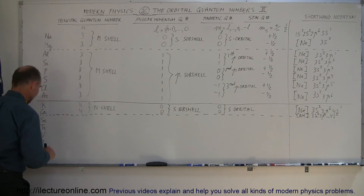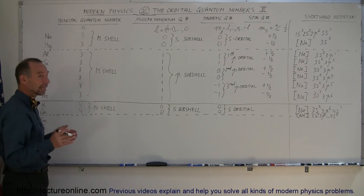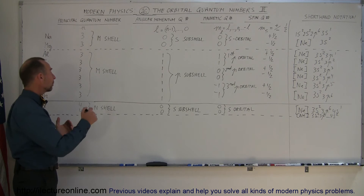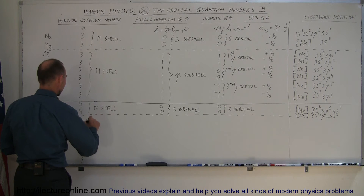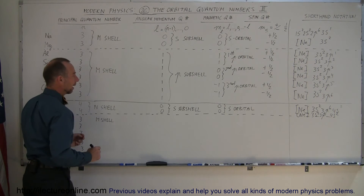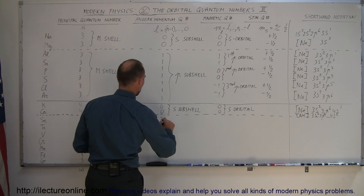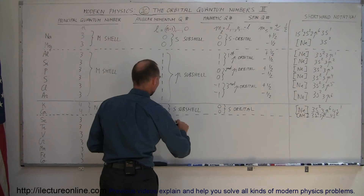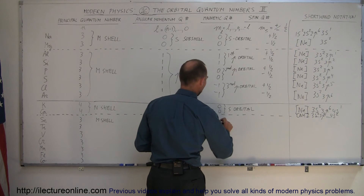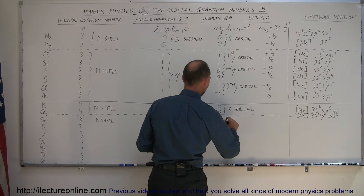For the next elements — scandium, titanium, vanadium, chromium, manganese, iron, and cobalt — the electrons begin to fill the D-orbitals, going back to fill up the third energy level, the M-shell. The angular momentum quantum number is now 2, corresponding to the D-subshell, and the magnetic quantum numbers range from +2 to -2 for the five D-orbitals.